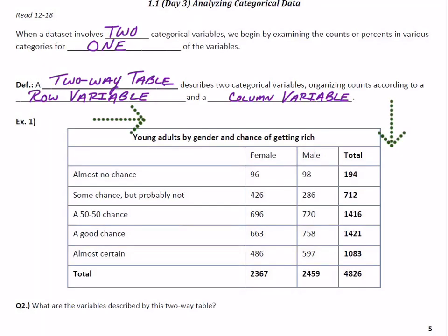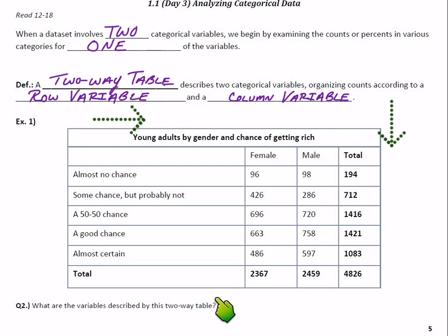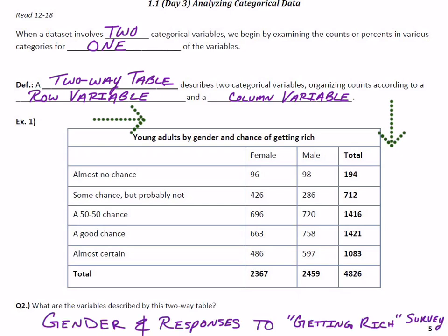Question 2 asks: what are the variables described by this two-way table? There are two variables. You can look at either the row variable or the column variable — those being gender as the column variable, or the responses to the getting rich survey as the row variable.